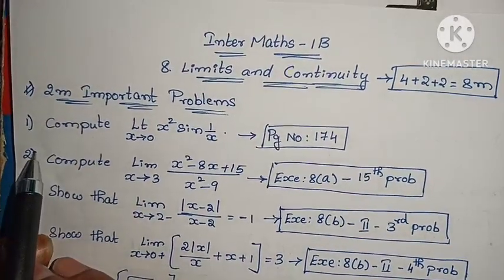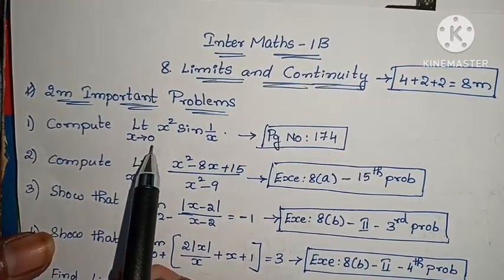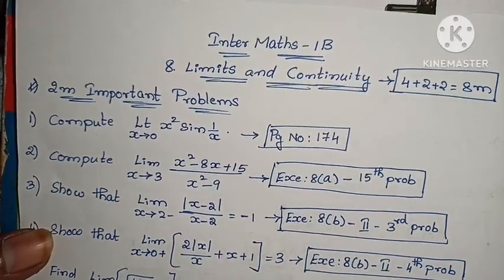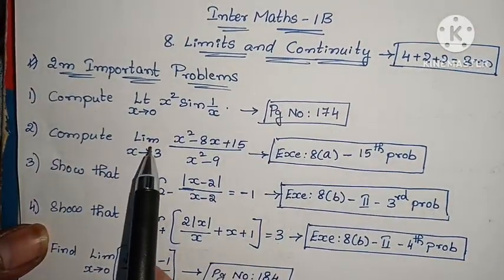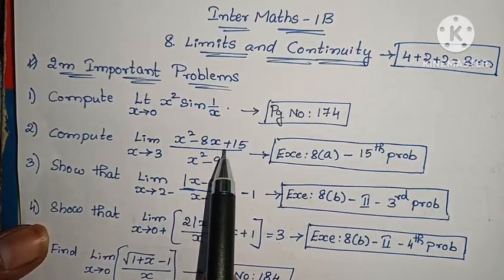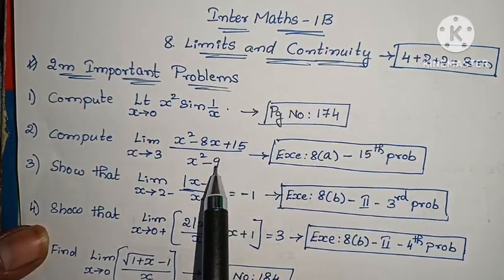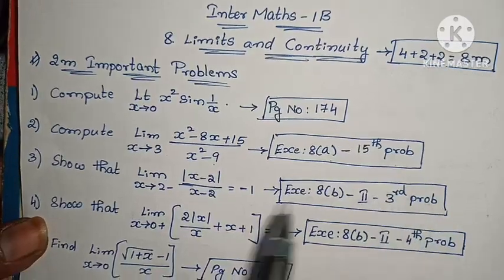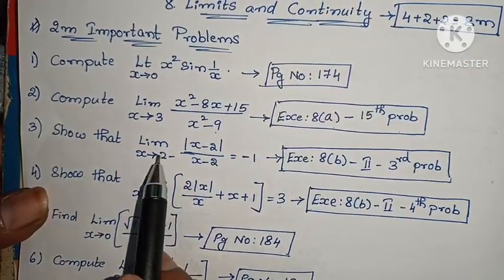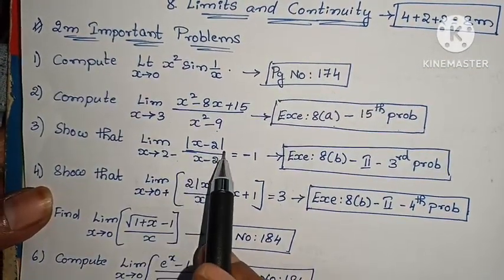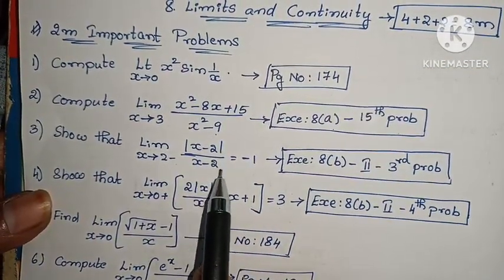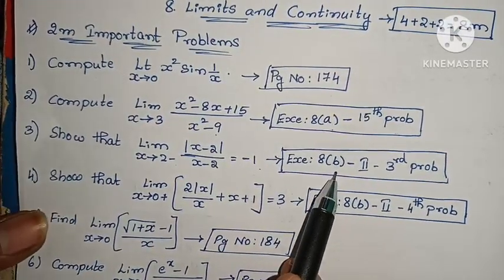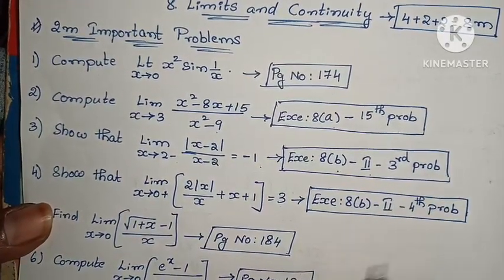First question: compute limit x tends to 0, x squared into sin(1/x). Page number 174. Next, compute limit x tends to 3, x squared minus 8x plus 15 by x squared minus 9 — 15th problem. Next, show that limit x tends to 2 minus, modulus of x minus 2 by x minus 2 equals minus 1 — 2nd Roman, 3rd problem.